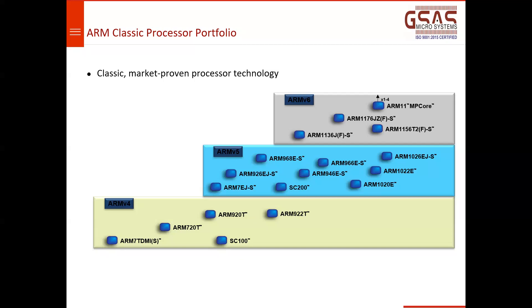ARM v6 corresponds to the Cortex-M0 and M0+ — the lower-end M series — and ARM11. ARM11 did not come into embedded at all; it went to enterprise Java applications. Z stands for Xscale technology and J stands for Java.